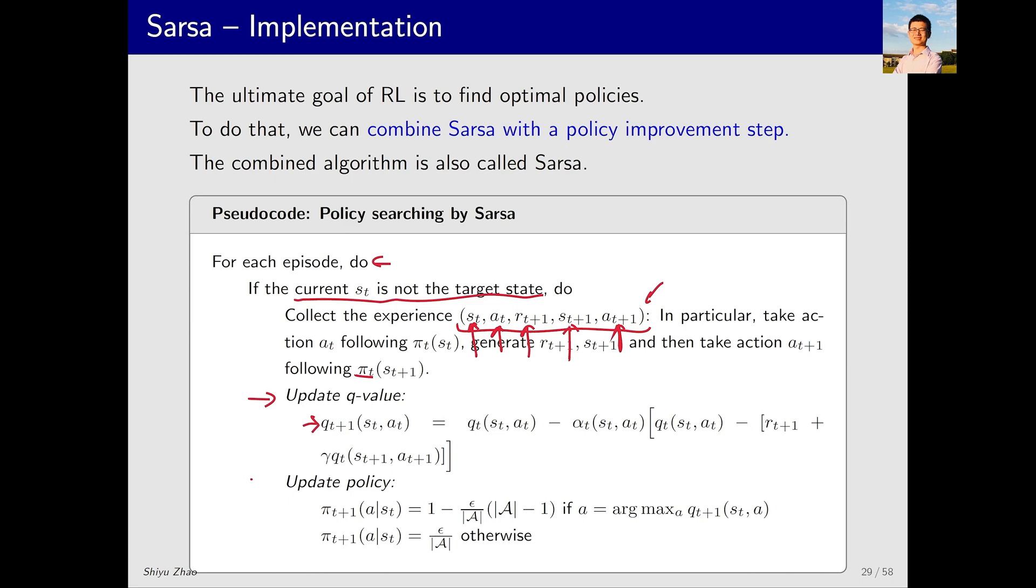Next, we need to perform the Q value update, also known as policy evaluation. We calculate the Q value corresponding to π_T. This is given by the equation we previously discussed. After this, we perform a policy update. How do we update the policy? We select the action with the highest Q value. However, this is done using an epsilon greedy policy. It means that instead of always choosing the greedy action with a probability of 1, we choose it with a high probability, while still giving a small probability to other actions. After obtaining this policy, we use it to generate new experiences and continue the iteration process.